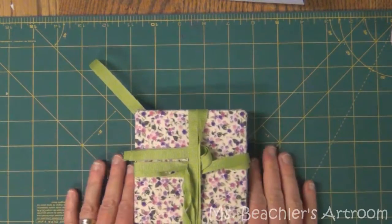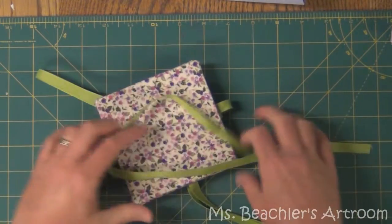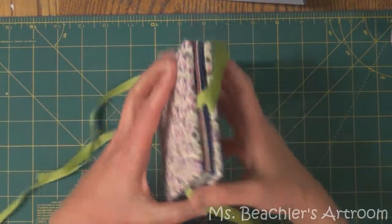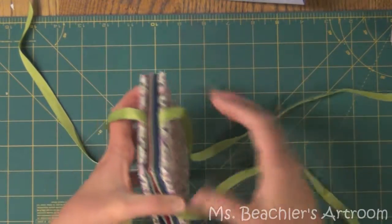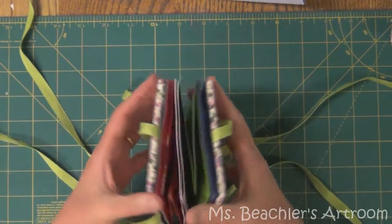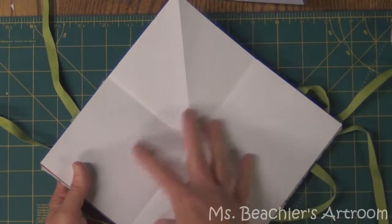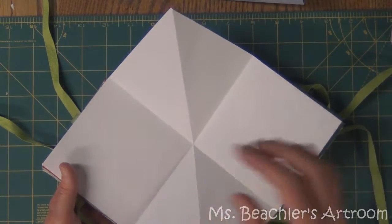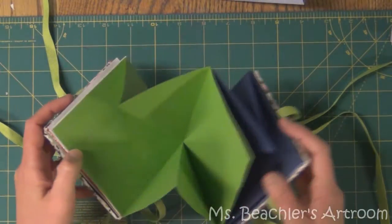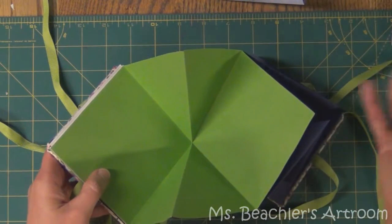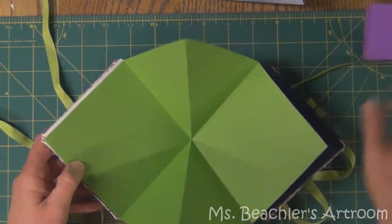There are many other types of closures that you can use, but what's really fun about these is not the cover and the closures but rather what's inside. And that brings me to the second reason that these are fun to make. They contain pages that you can open up and draw pictures, paint pictures, create collages, write down things, but they also act as little pockets so you can actually carry other smaller books in this little lotus book.